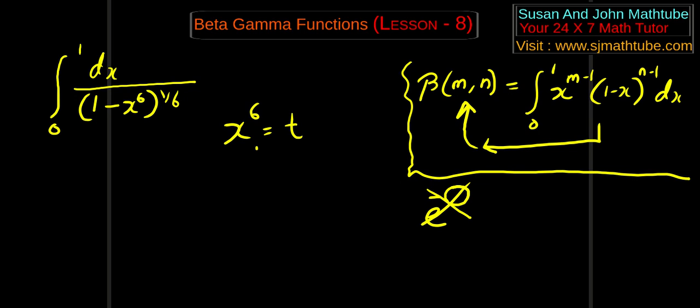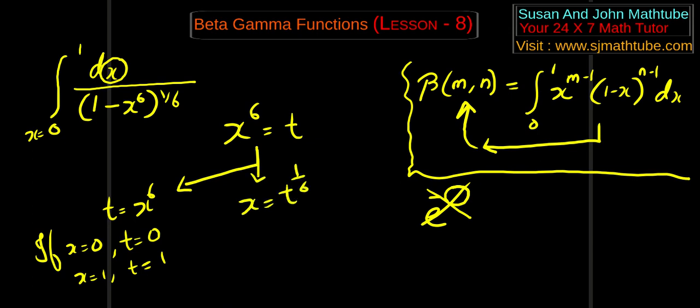So we put x power 6 is equal to t. Let's see what happens. The two important things, t equal to x power 6. So if x is equal to 0, the variable of integration is x. So we have x equal to 0 to 1. If x is equal to 0, we have 0 to the power 6, that is 0. And if x is equal to 1, we have t is equal to 1 to the power 6, that is 1. Now we have x is equal to t to the power 1 by 6. That means dx is equal to 1 by 6, t to the power 1 by 6 minus 1, dt. And whatever happens, don't leave that minus 1. You may need that minus 1 at the last.